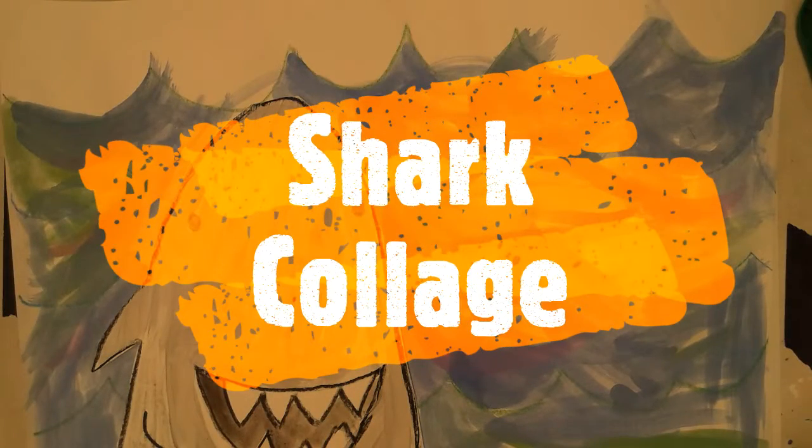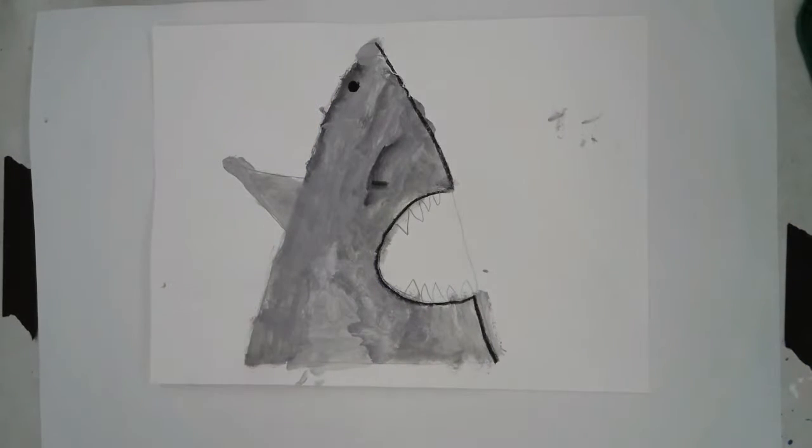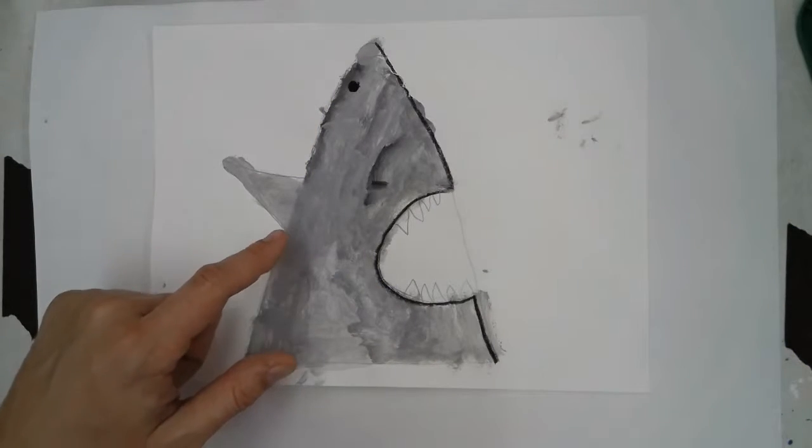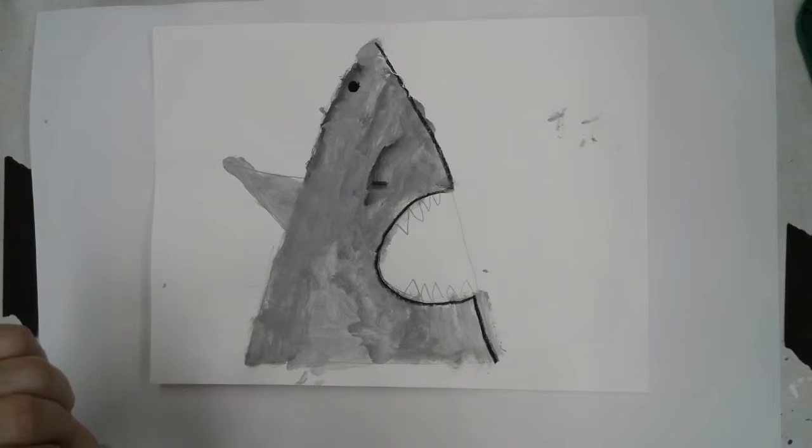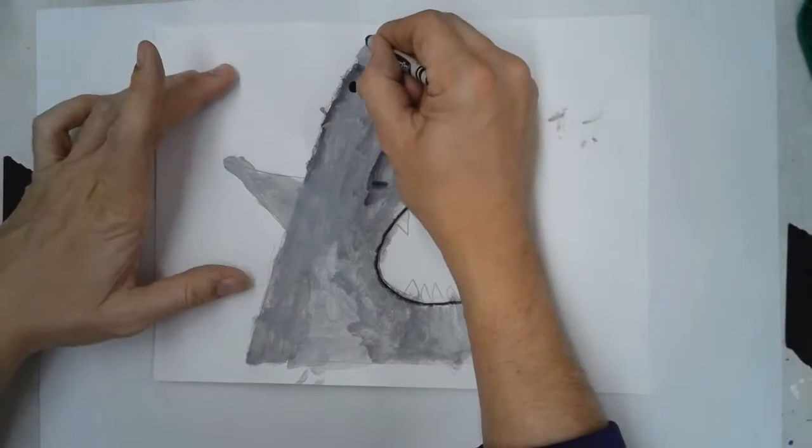Today we're going to be making a shark collage. We're going to need a large paper and the shark that we painted last time. The shark that we painted last time was mixed using gray, so we're going to take a black crayon and first outline it.